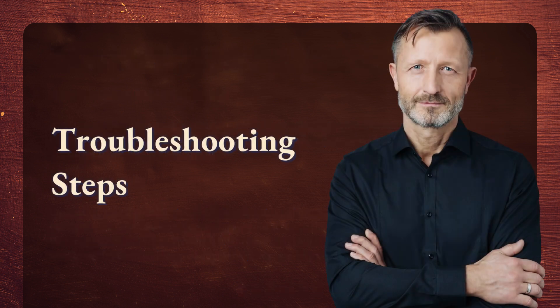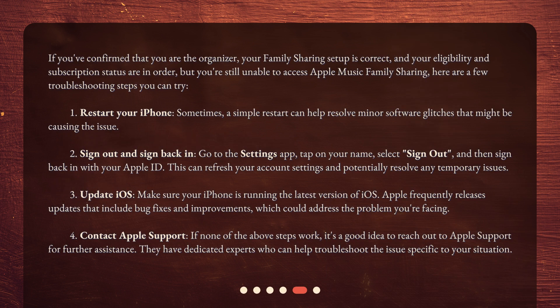Troubleshooting steps. If you've confirmed that you are the organizer, your family sharing setup is correct, and your eligibility and subscription status are in order, but you're still unable to access Apple Music Family Sharing, here are a few troubleshooting steps you can try. 1. Restart your iPhone — sometimes a simple restart can help resolve minor software glitches that might be causing the issue. 2. Sign out and sign back in: go to the Settings app, tap on your name, select Sign Out, and then sign back in with your Apple ID. This can refresh your account settings and potentially resolve any temporary issues.